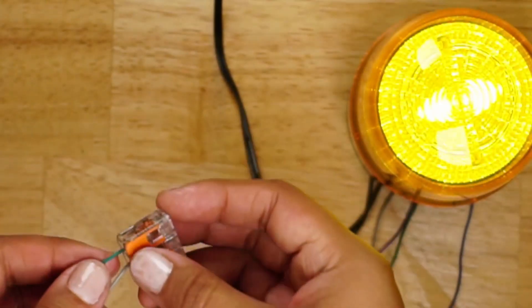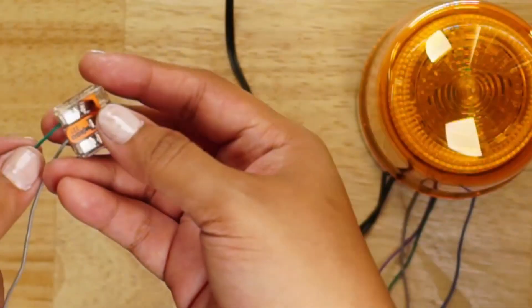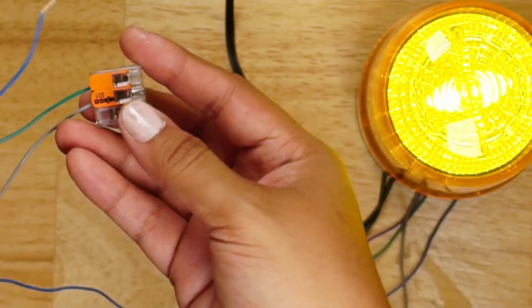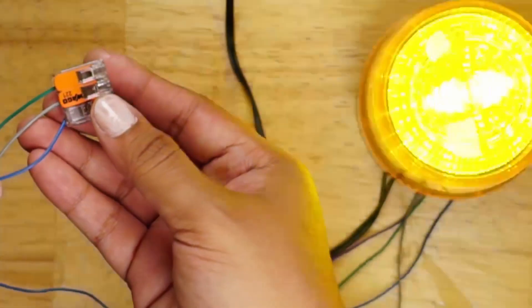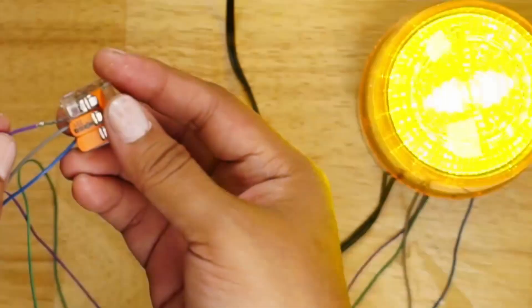Switching to green channel 1, the beacon is continuous lighting. With both channel 1 and 2 connected to common, the beacon flashes at 120 flashes per minute. Adding the purple wire activates the buzzer.